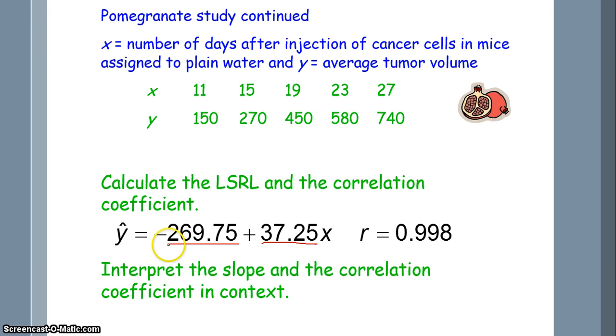Now, as far as interpreting the intercept, it means nothing. Just think of it this way. What are you measuring? You're measuring the size of a tumor, right? Can you have a negative size of a tumor? No, a tumor cannot be negative size. It cannot have a negative size. So, the intercept makes absolutely no sense. So, you don't need to worry about it. You just need to know how to interpret the slope.